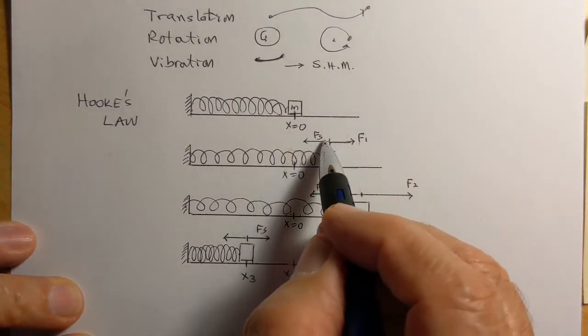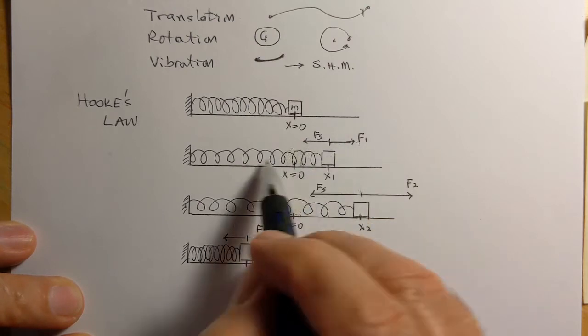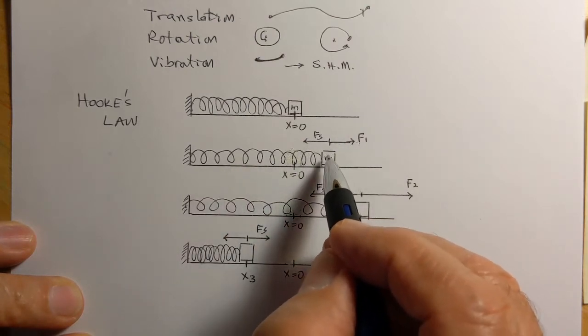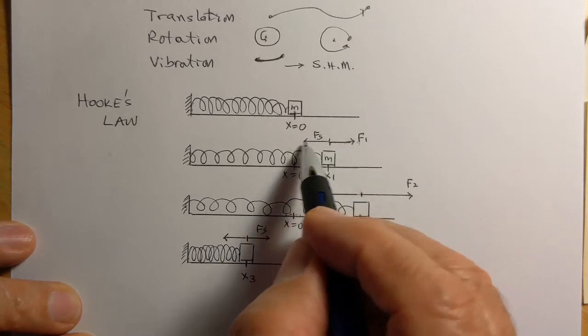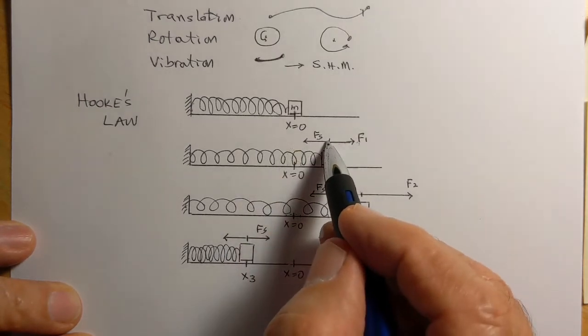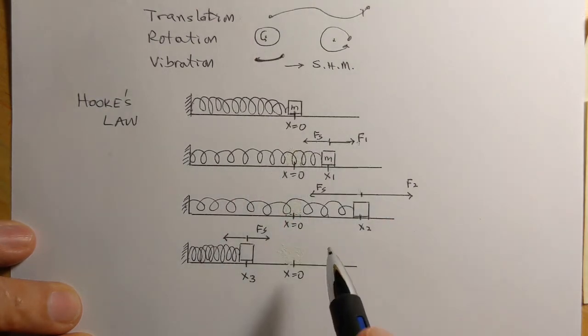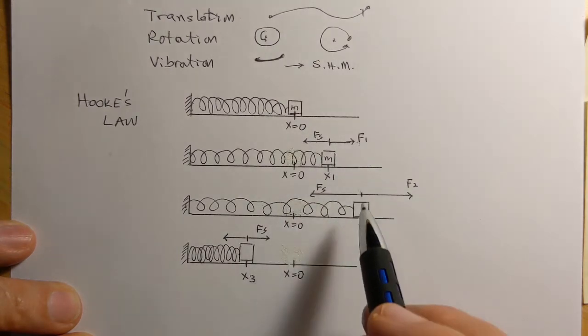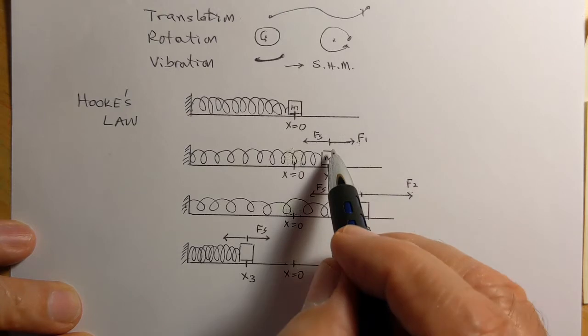The spring will be applying a force negative F1 which is opposite to F1, and the object, the mass m, is in equilibrium. So the force with which we are pulling is exactly equal to the force with which the spring is pulling it backwards. The two are equal and opposite.